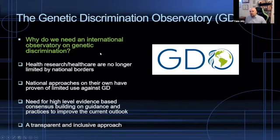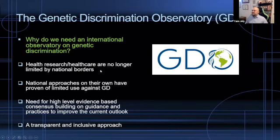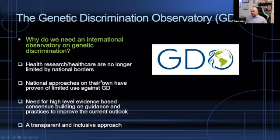So why did I think we needed an international observatory on genetic discrimination? First, health research and healthcare are no longer limited by national borders. We're exchanging health data and want to share data across national boundaries, because we know this is the future for health research — the value of information is in its richness and diversity. And in order to do that, we have to go beyond national borders. But what that means is that national laws won't protect you about what happens to your information in other countries.